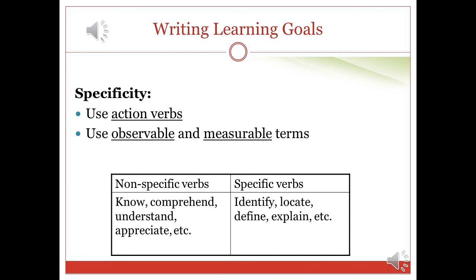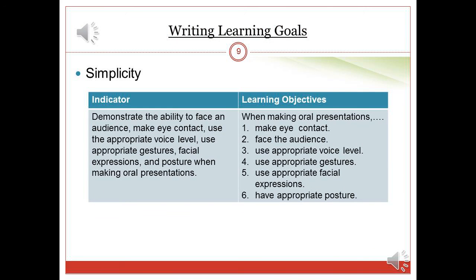We always want students to understand the content, but if we write a learning goal as 'understand addition,' this would be too general and too abstract to be accurately measured. We have to be very specific and indicate the observable behaviors that demonstrate understanding, such as solving problems or explaining a solution. Sometimes teachers need to simplify a content standard or an indicator to formulate a learning goal. When doing this, make sure that each learning goal includes only one action and one noun phrase — break down enumerations to make sure that each skill has its own learning goal.